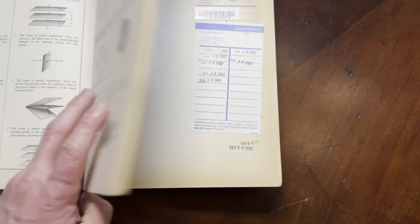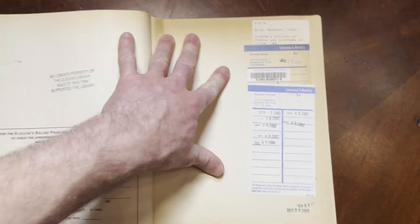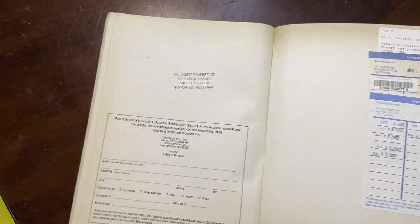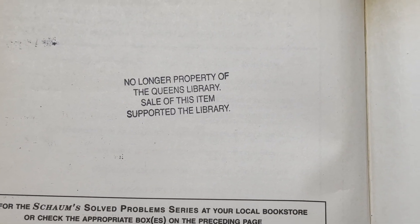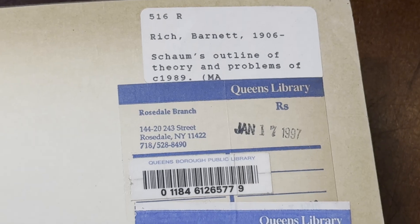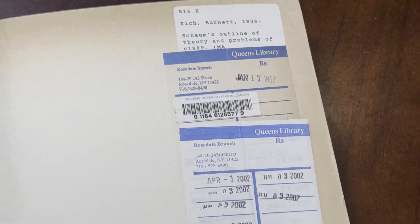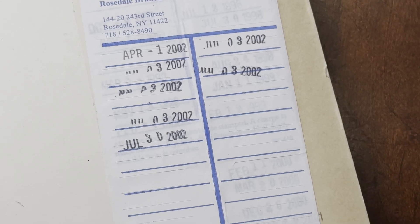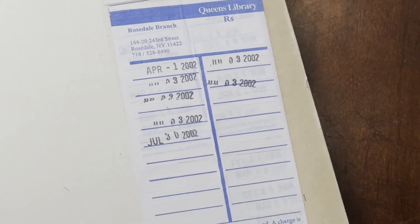It's just a good book to use as a reference, or you could use it for self-study. This particular copy apparently came from a library. Look at this. This is kind of cool. No longer property of the Queen's Library. Sale of this item supported the library. And I guess, where was that? Is that New York, maybe? Yeah, New York. Rosedale Branch. Interesting. And look at the dates. So long ago. It was early 2000s. So it's been a while since the early 2000s.